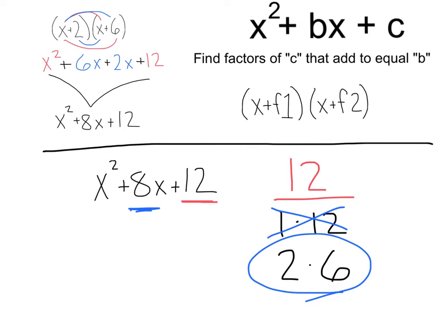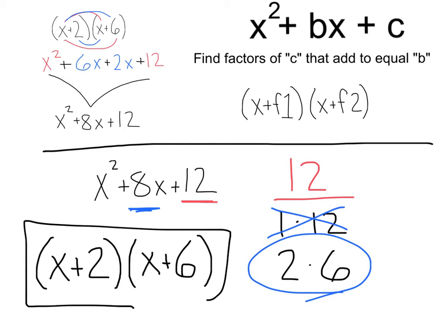Okay, now we take these two factors and do x plus factor 1, x plus 2, and x plus factor 2, 6. And this is going to be our factored answer. And we can see that's exactly where we started when we distributed this out. So, great.